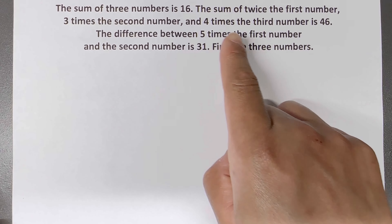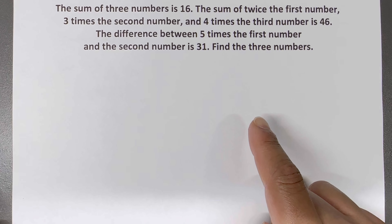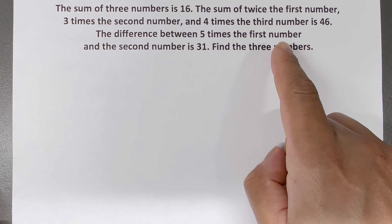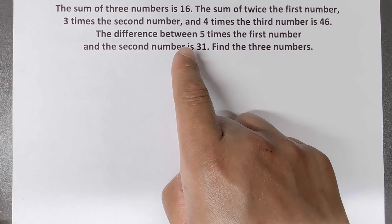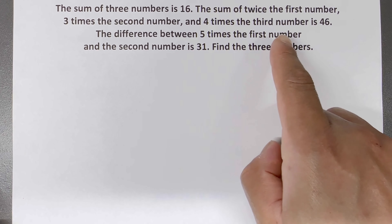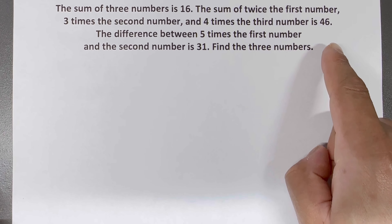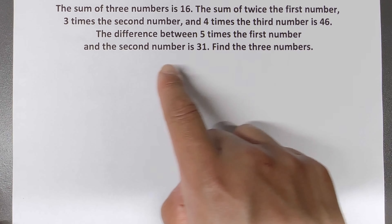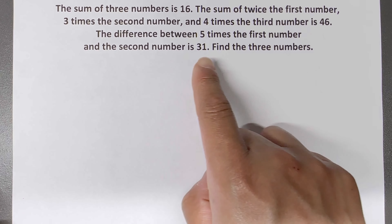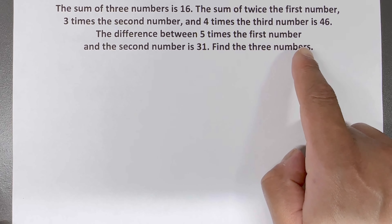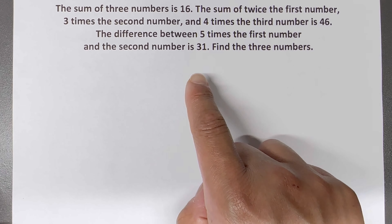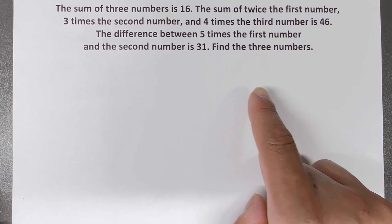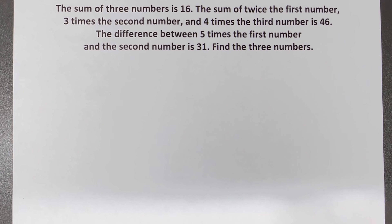The sum of three numbers is 16. The sum of twice the first number, three times the second number, and four times the third number is 46. The difference between five times the first number and the second number is 31. Find the three numbers.